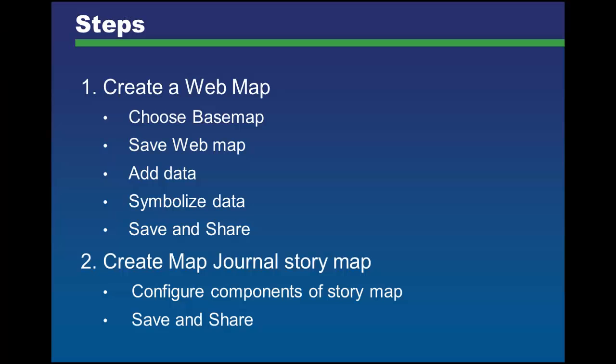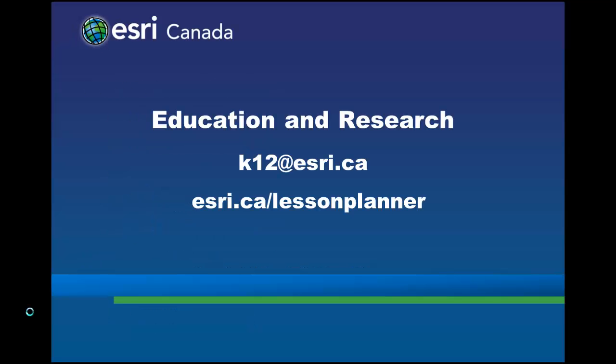Let's go through the steps again on how to create a map journal story map. First, create a web map: choose your base map, save your web map, add data, symbolize data, and then save and share your web map. Second, create your map journal story map, configure the components including text, images, videos, and maps, then click Save and share your story map. Contact us at k12@esri.ca and go to our lesson planner for free resources at esri.ca/lessonplanner.